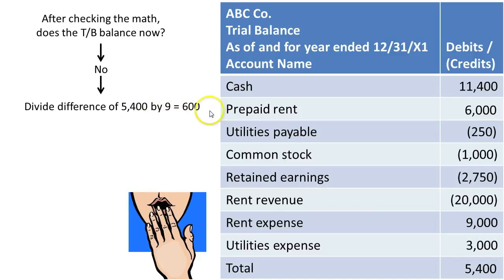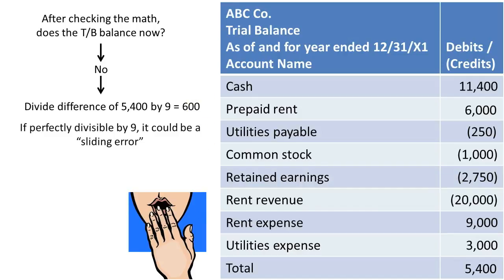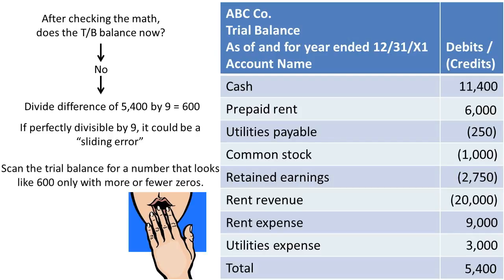You'll notice there are no extra decimal places — $5,400 is perfectly divisible by 9, and that's a key point for finding transposition errors and sliding errors. Had there been decimals, it probably would not be a transposition or sliding error. Since it's perfectly divisible by 9, it could be a sliding error. You'd want to scan the numbers in this trial balance and look for a number that looks like $600 only with more or fewer zeros.